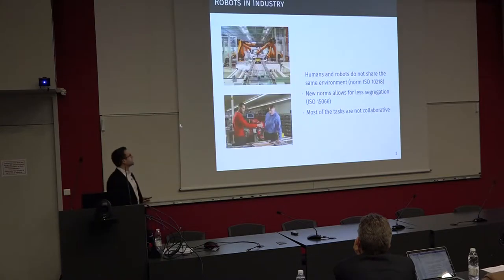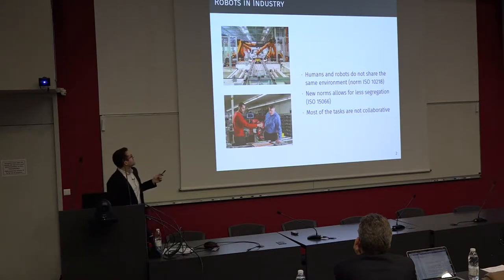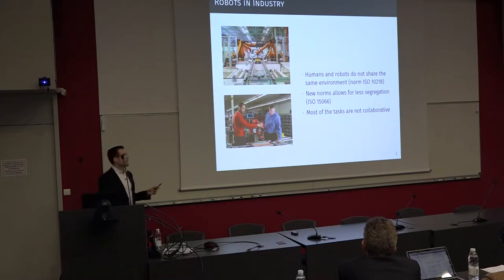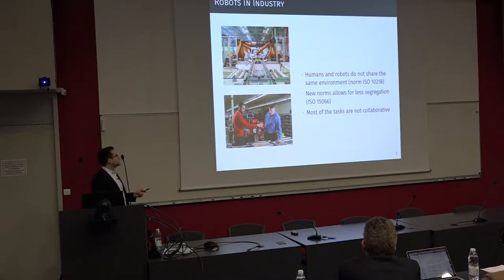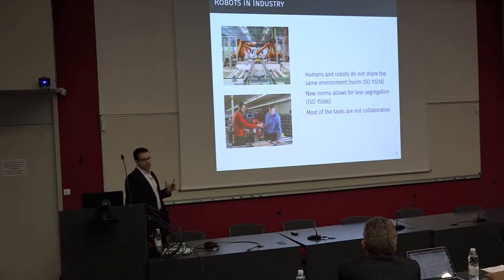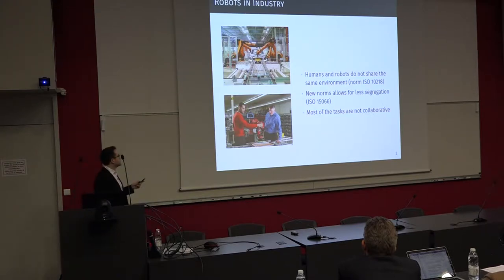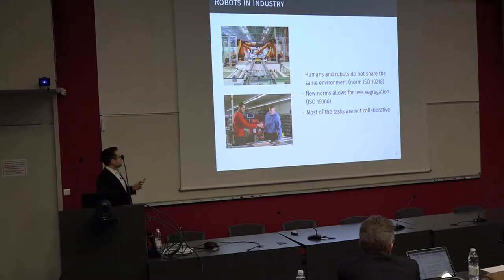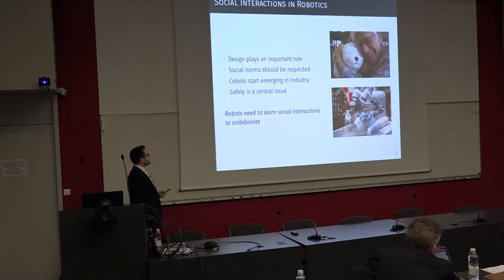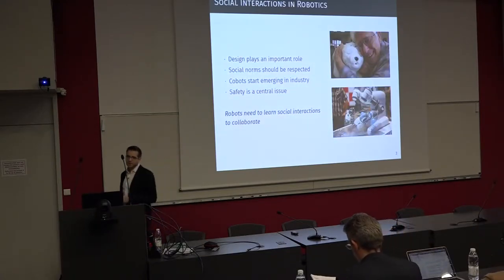But how is it right now in industry? Do we really have those social robots? Well, not really. The types of robots currently most common in industry are very dangerous and are segregated from humans. However, we can see the emergence of new kinds of robots that are able to collaborate with humans and use the skills of humans — for example, to be trained. Yet most tasks between humans and robots are not truly collaborative. So how do we make social interaction in robotics?